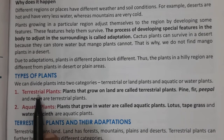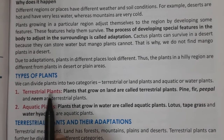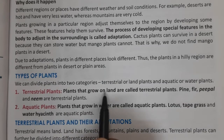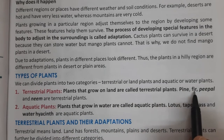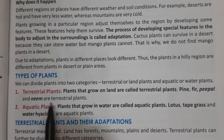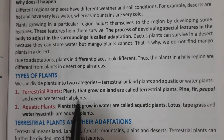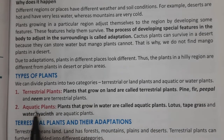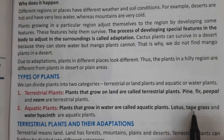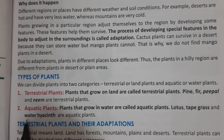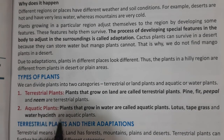Number 1: Terrestrial plants. Plants that grow on land are called terrestrial plants. Pine, fir, peepal, and neem are terrestrial plants. Number 2: Aquatic plants. Plants that grow in water are called aquatic plants. Lotus, tapegrass, and water hyacinth are aquatic plants.